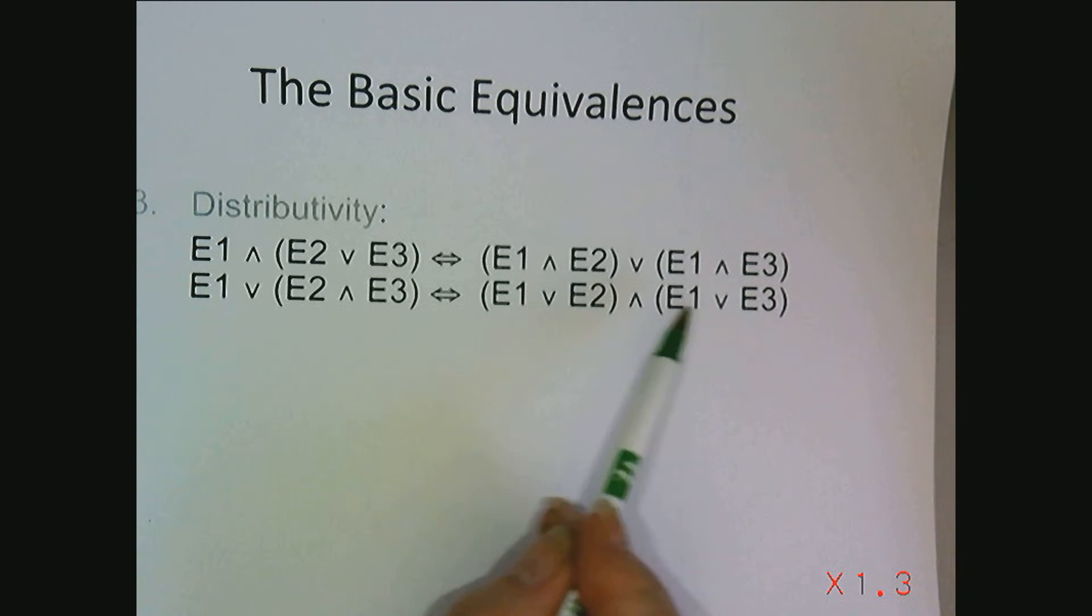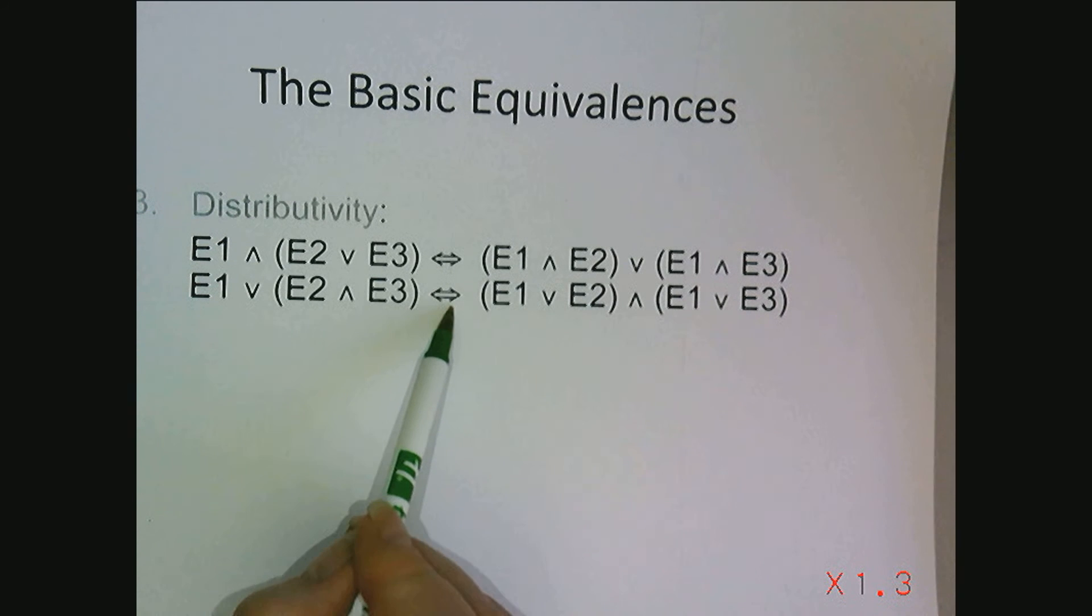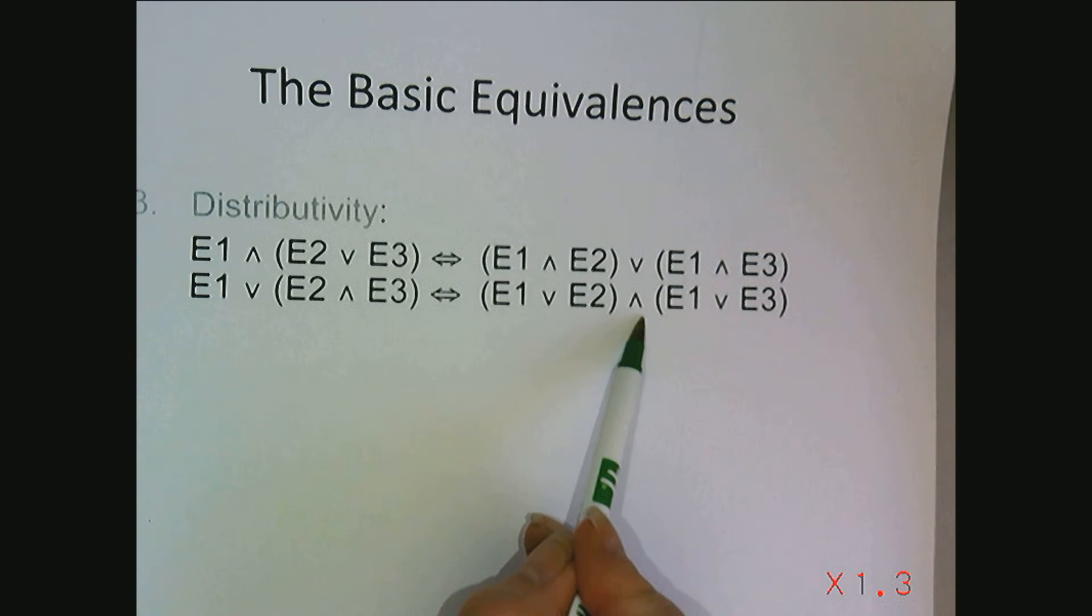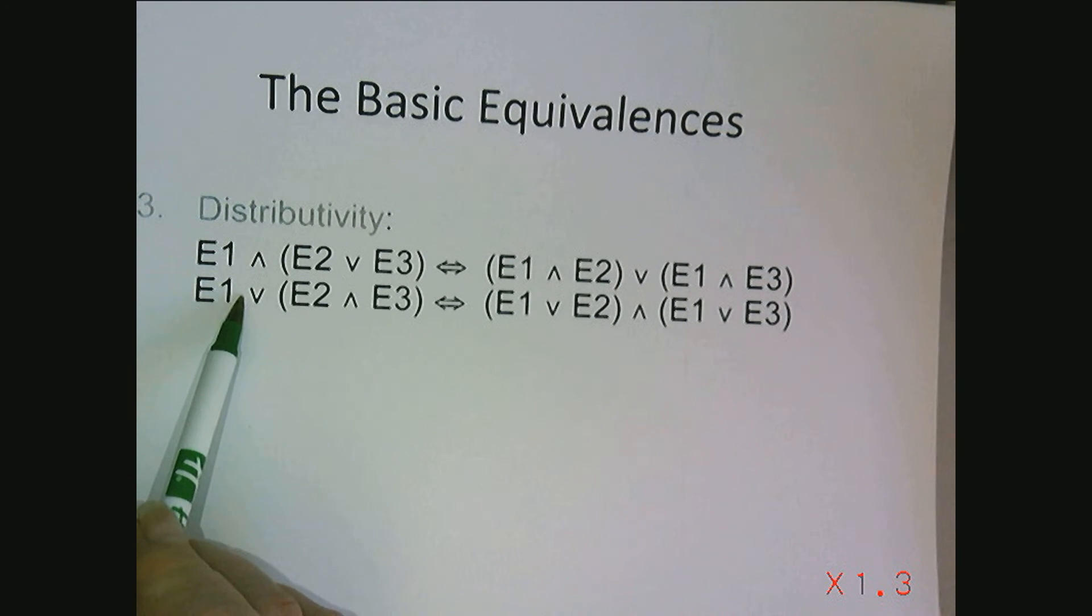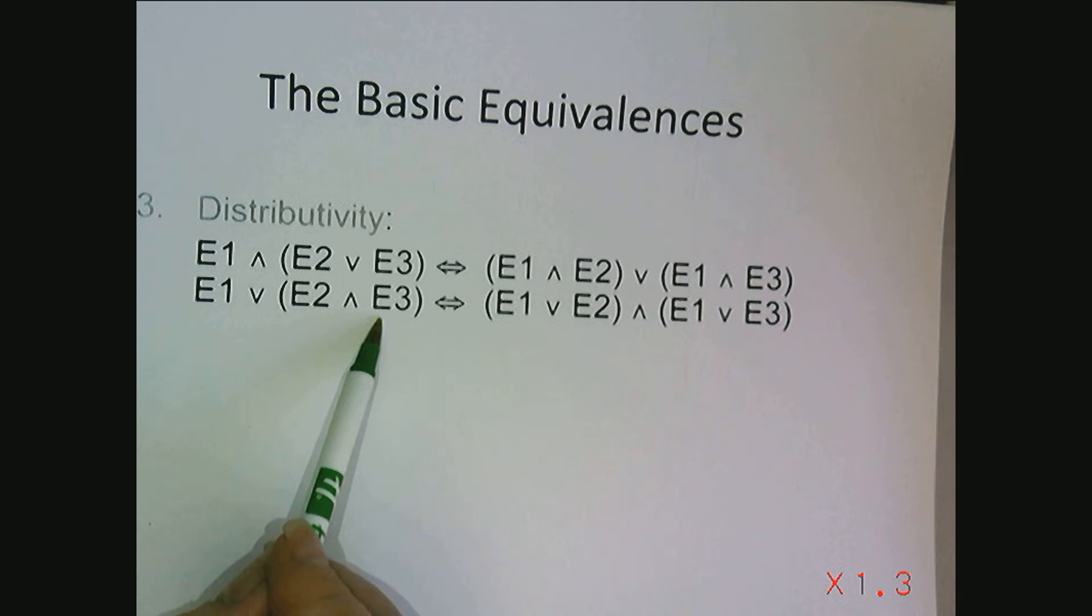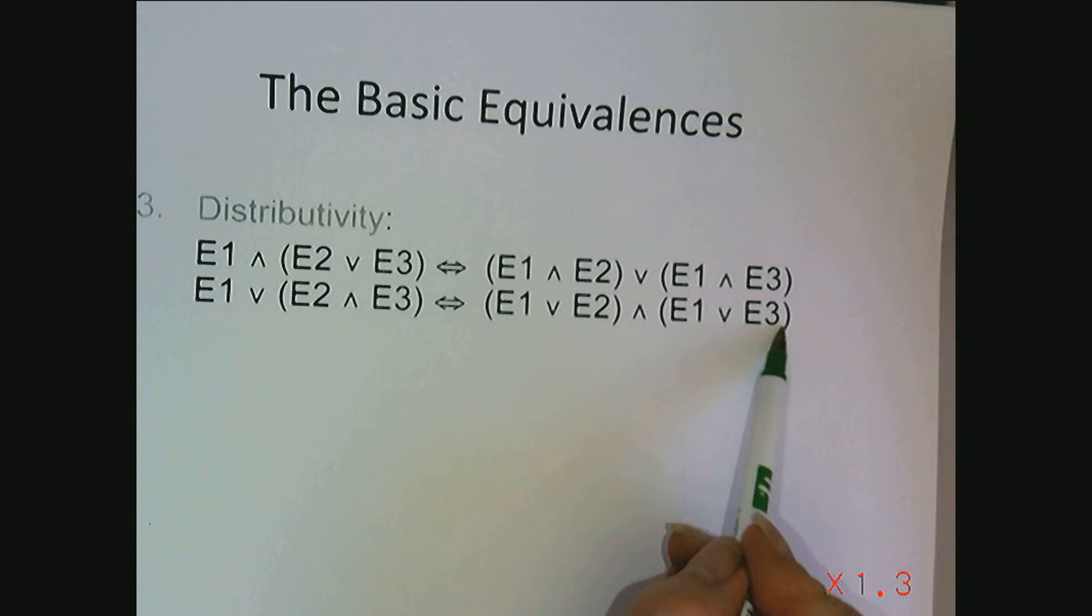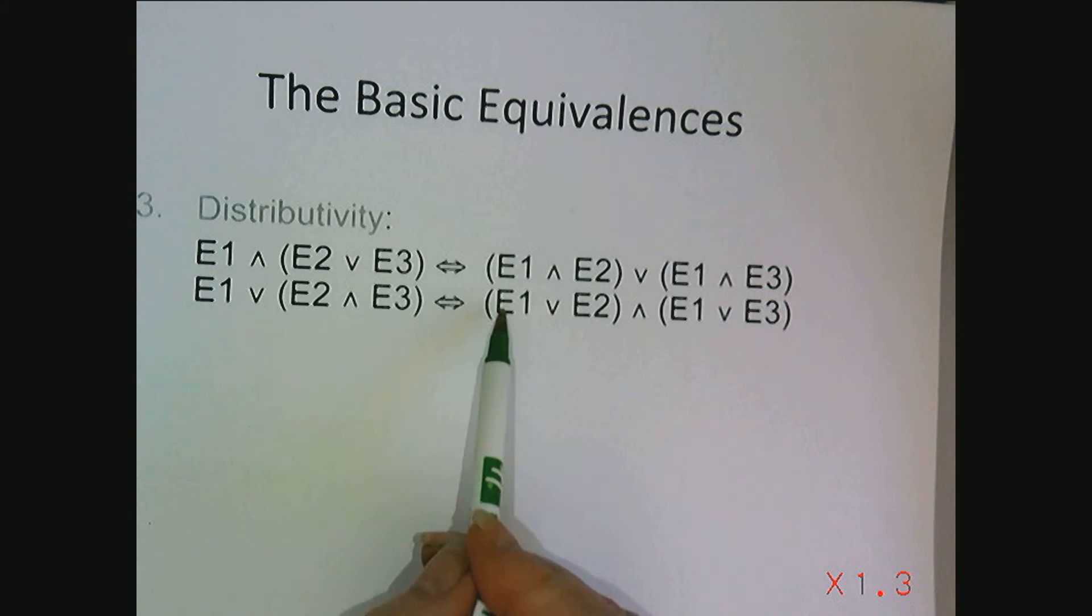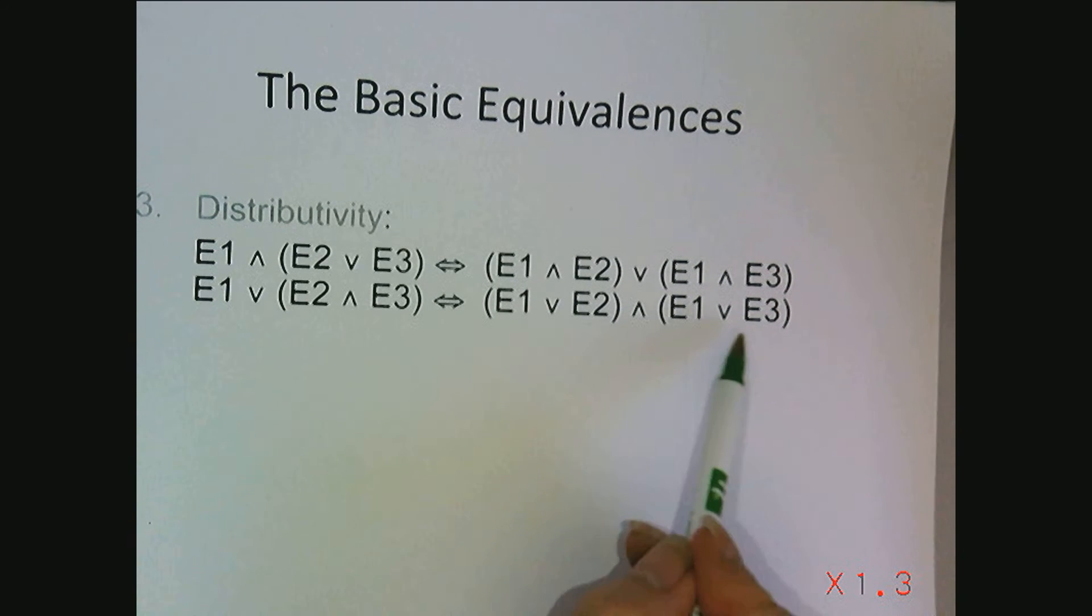E1 or the quantity E2 and E3 is equivalent to the quantity E1 or E2 and the quantity E1 or E3. Remember that equivalence is commutative, so it goes both ways. The quantity E1 or E2 and the quantity E1 or E3 could be written as E1 or the quantity E2 and E3. I almost think of it as equivalent to factoring in algebra. You could pull out the E1 from the expressions.